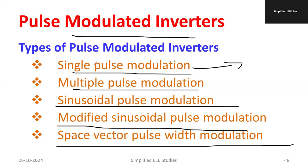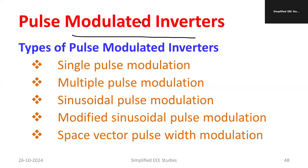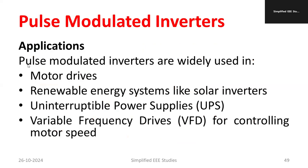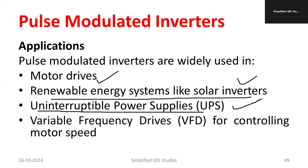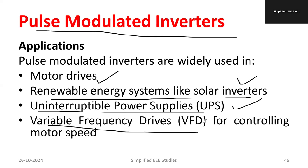In the coming video, I am going to discuss how single pulse modulation operates and its requirements. Major applications are focused especially in motor drives. Also, in renewable energy — such as solar inverters — we apply the pulse width modulated inverter technique, as well as in UPS (uninterrupted power supply) design. Additionally, VFD — variable frequency drives — use PWM for controlling motor speed, since by adjusting the pulse width we can control both the voltage and frequency.